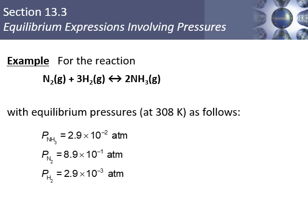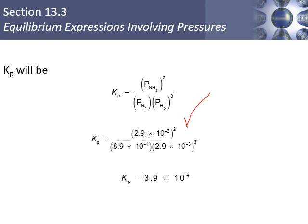To find Kp given the pressures, take the pressure of NH3 and square it, then divide by the pressure of N2 and the pressure of H2 raised to the third power — meaning you'd raise 2.9 × 10⁻³ to the third power. After doing all the dividing and multiplying, you get Kp = 3.9 × 10⁴.